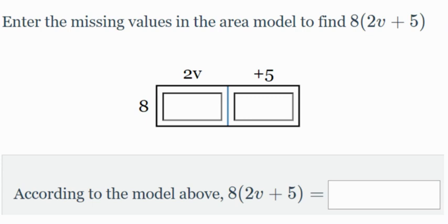So we have 8 right here, and this comes from right on the left side of the parentheses, and we have 2v, which comes from the first term inside the parentheses, and plus 5, which is the second term in the parentheses. So this is an area model. So we know that the area of a rectangle is length times width. So we know that the area of this little rectangle here, from the blue on over to the left, is the same as 8 times 2v. Well, what's 8 times 2v? 8 times 2v is going to give us 16v.